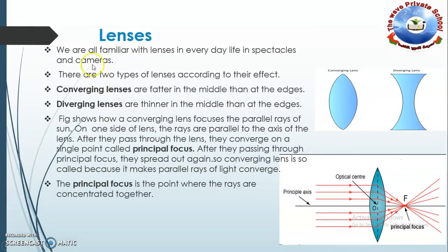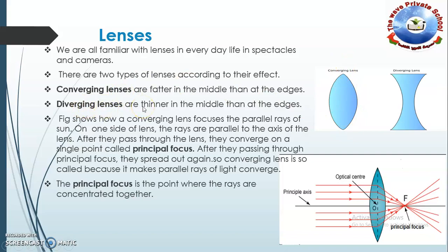What are lenses? We are all familiar with lenses in everyday life in spectacles and cameras. There are two types of lenses according to their effect: converging lens and diverging lens. Converging lenses are fatter in the middle than at the edges. Diverging lenses are thinner in the middle than at the edges.